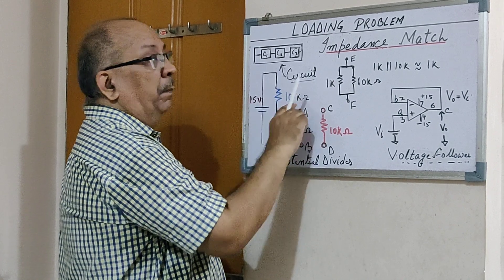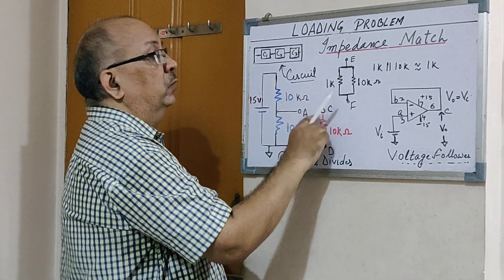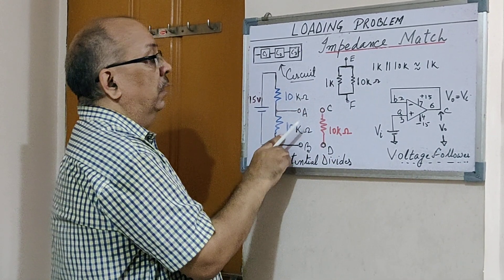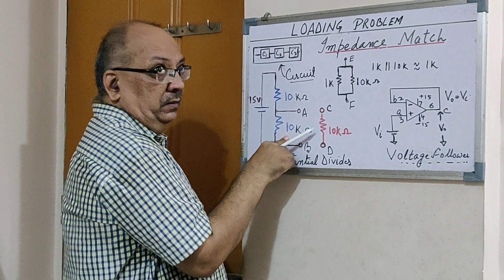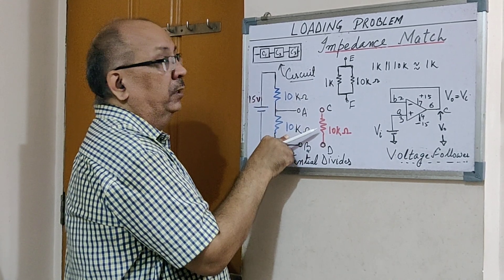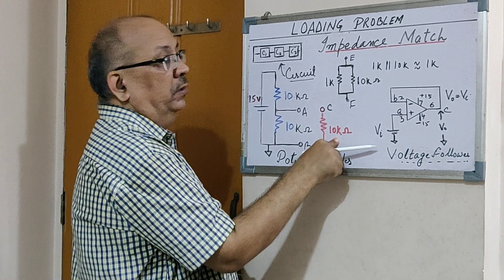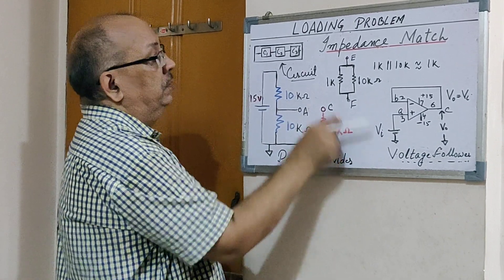impedance of the source circuit should be very low and the input impedance of the receiving circuit should be very high. Now the simple solution: assume I don't have any choice of changing the resistances or the load. What I'll do is use the concept of voltage follower. We all know in a voltage follower, the op-amp is in this configuration, where